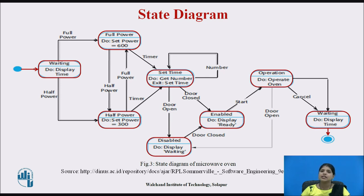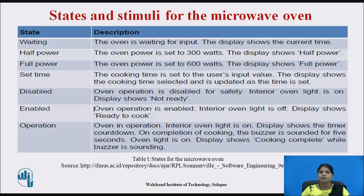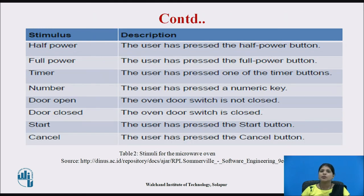On completion of cooking a buzzer is sounded. The oven has a simple alphanumeric display used to show various alerts and warning messages. This table shows the states for the microwave oven with a tabular description of each state. The problem with state based modeling is that the number of possible states increases rapidly, so for large system models you need to hide detail in the model. Another table shows the stimuli for the microwave oven and how the stimuli that cause state transitions are generated.